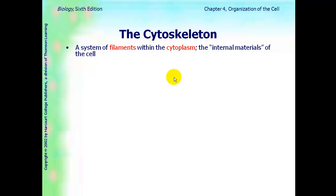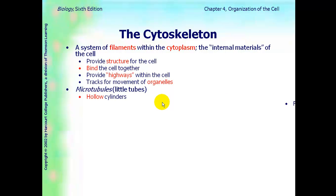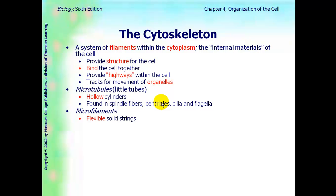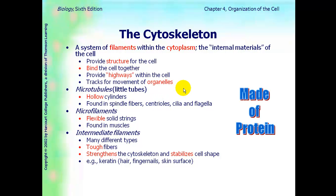Another organelle is the cytoskeleton — a system of filaments within the cytoplasm. It provides structure for the cell, binds the cell together, provides highways within the cell for things to move along, and tracks the movement of organelles. There are three different parts: microtubules, which are hollow cylinders found in spindle fibers, centrioles, cilia, and flagella; microfilaments, which are flexible and solid — not hollow — found in muscles; and intermediate filaments, which are tough fibers that strengthen the cytoskeleton and stabilize cell shape, found in keratin. The cytoskeleton is made of protein.